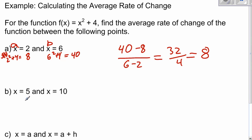Part b, we're going to plug in 5 and 10. So if x is 5, f of x would be 5 squared plus 4, which is 29. Plug in 10, 10 squared plus 4 is 104.